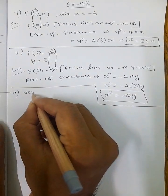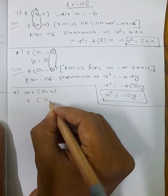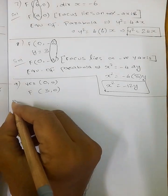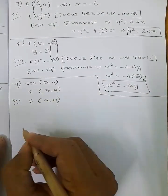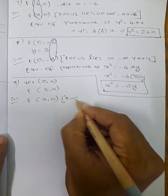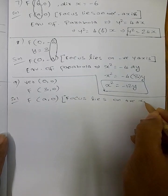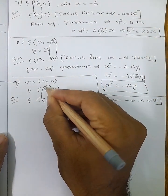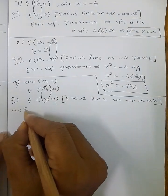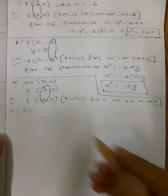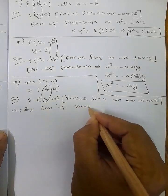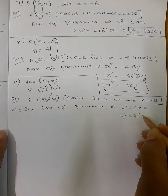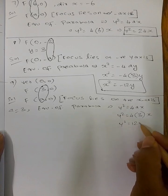9th question: vertex (0, 0) and focus (3, 0). Focus lies on positive x-axis, so compare with formula (a, 0), giving a = 3. Equation of parabola: y² = 4ax. Therefore y² = 4 × 3, so y² = 12x.